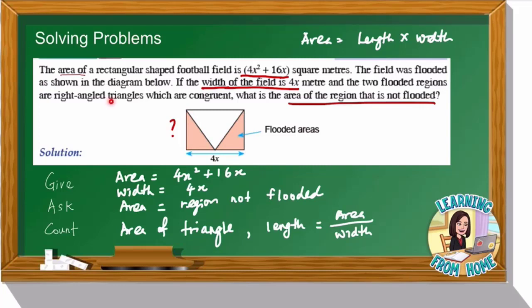From the question, there are two right angle triangles which are congruent. So if we find the area of one triangle, we can multiply it by two to get the total area of both triangles. We must find the area of the triangle in order to calculate the area of the region that is not flooded.